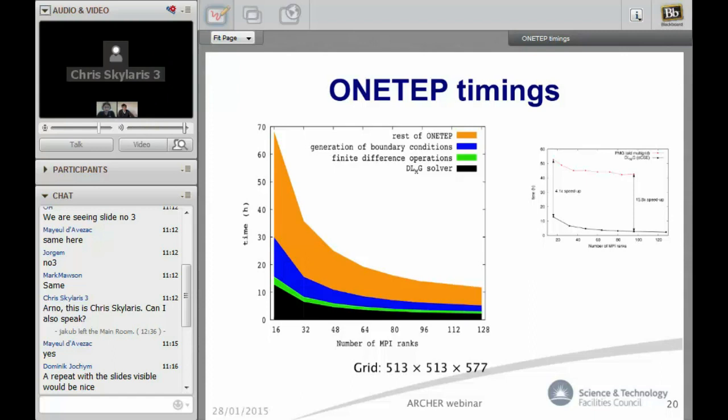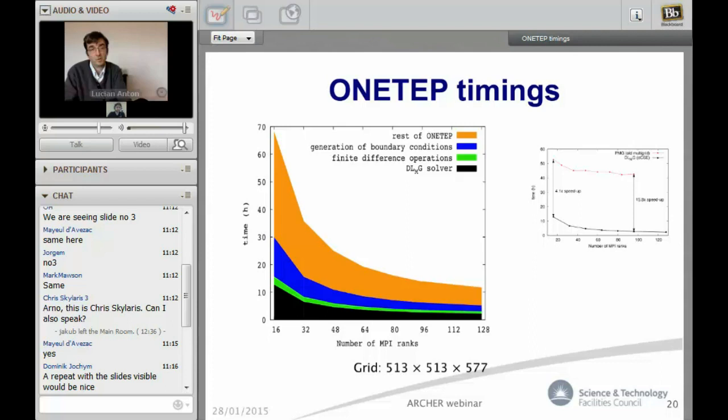Before we did the development of the DLMG with Lucien, our previous multigrid solver was so slow it was impossible to use it for any practical application. It only allowed us to develop the solvent model but didn't allow us to use it. It was only after the first DCSE and the first version of the DLMG that the solvent model in ONETEP became practical and usable in actual applications.